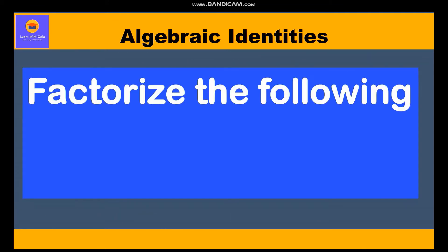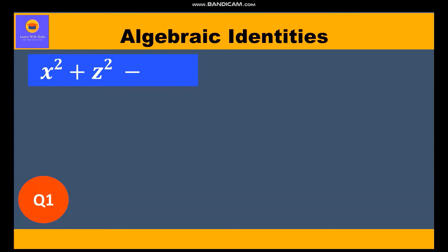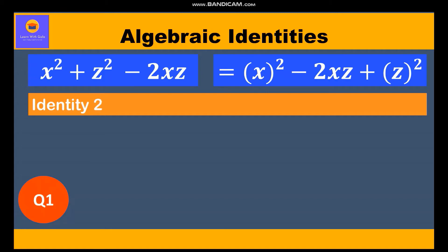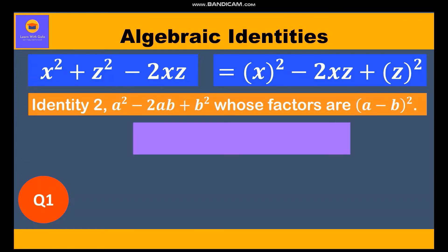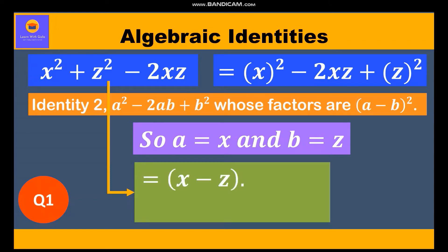Question 1: Factorize x² + z² - 2xz. Writing in the form of an identity: x² - 2·x·z + z². This matches identity two, a² - 2ab + b², where a = x and b = z. Therefore the factors are (x - z)(x - z) = (x - z)².